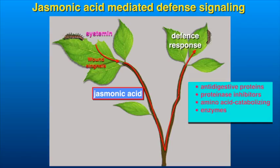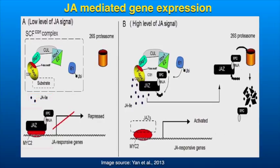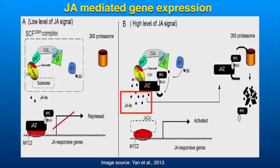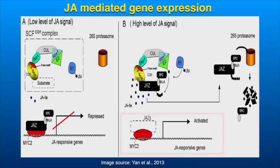Let us see how JA acts at the molecular level to bring about changes in gene expression. In the absence of JA, the genes coding for JA response proteins like proteinase inhibitors are not expressed. This is because transcriptional repressors called JAS proteins, along with other accessory proteins, bind to MYC2 transcription factors. MYC2 transcription factors are activators of JA response gene expression. In the presence of JA-isoleucine, JAS proteins are degraded, thereby allowing MYC2 transcription factors to induce expression of JA response genes.